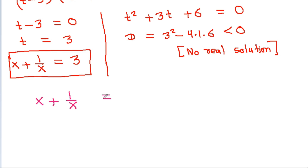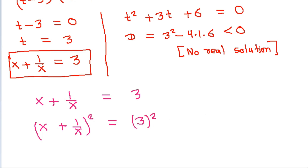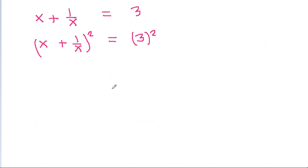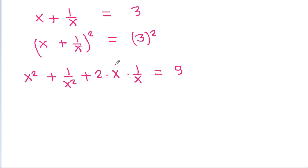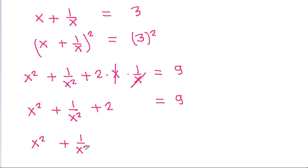We get x plus 1 by x equal to 3. Squaring both sides, x plus 1 by x squared equals 9, which gives x squared plus 1 by x squared plus 2 times x times 1 by x equals 9. Since x cancels, x squared plus 1 by x squared plus 2 equals 9, so x squared plus 1 by x squared equals 7.